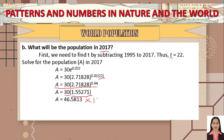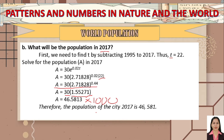Multiplying 46.5813 by 1,000 gives approximately 46,581. So the population of the city in 2017 will be 46,581. Remember, when finding future or present population, always express the answer as a whole number.